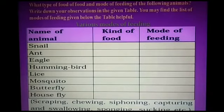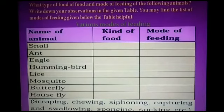Hummingbirds: the kind of food is nectar, and the mode of feeding is sucking. Lice: the kind of food is blood, and the mode of feeding is sucking.